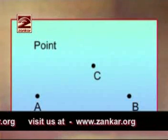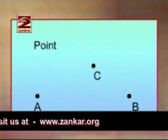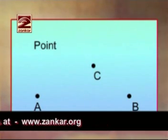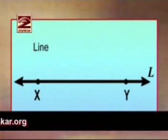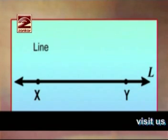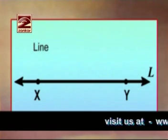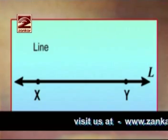We can see only a dot, and that is called a point. So these are points A, B, and C. This figure indicates it is a line XY, or line L. It is extended on both directions.